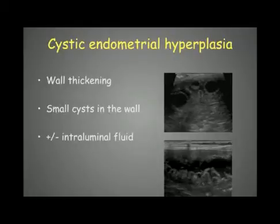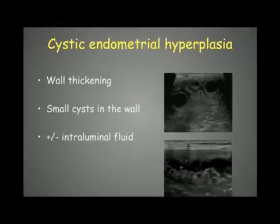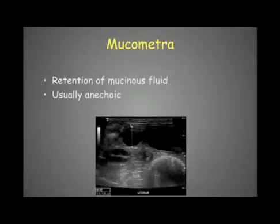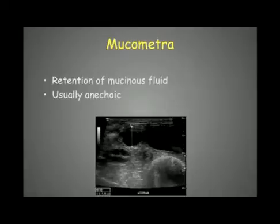Some cysts are much smaller and more difficult to see. In some cases there will be beginning production of intraluminal fluid — mucus production from glandular wall secretions. The second stage is mucomitra, with retention of this mucinous fluid. The fluid usually appears anechoic, but we must be careful: the ecogenicity of the fluid alone — anechoic versus isoechoic — can make it difficult to differentiate mucomitra from pyometra.